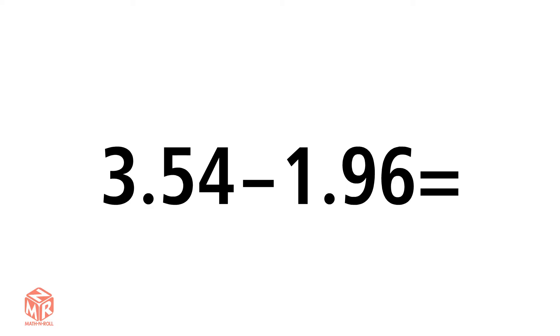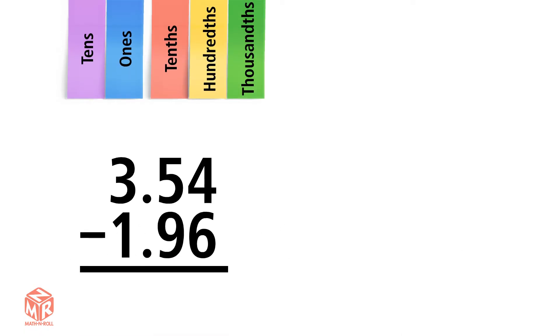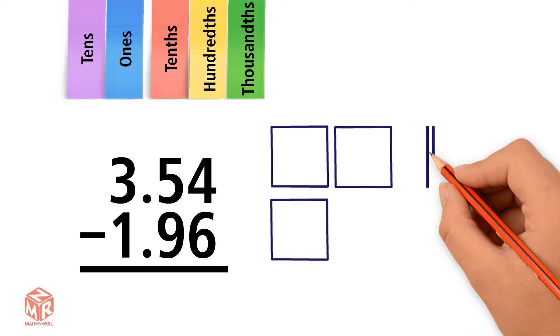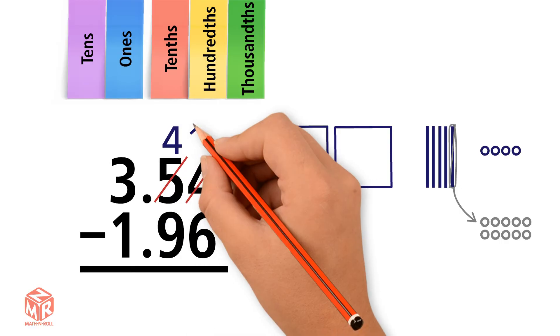Let's try another example: 3.54 minus 1.96. We start by lining up the decimal points. Let's draw 3.54. Are there enough hundredths to subtract 6 from 4? No, so we have to regroup. We regroup 1 tenth to make 10 hundredths. Now we're left with 4 tenths and 14 hundredths.